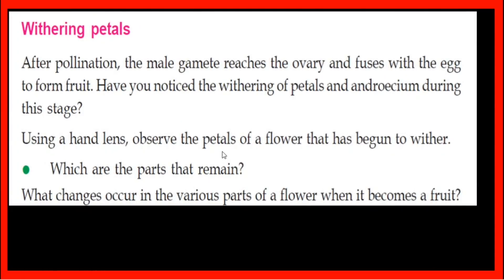After pollination, the male gamete reaches the ovary and fuses with the egg to form fruit. Then the petals fall off.